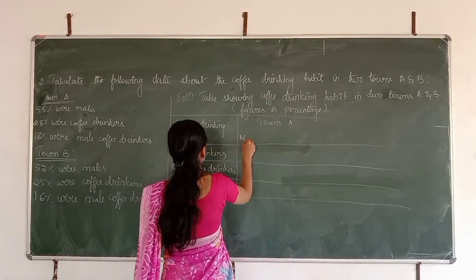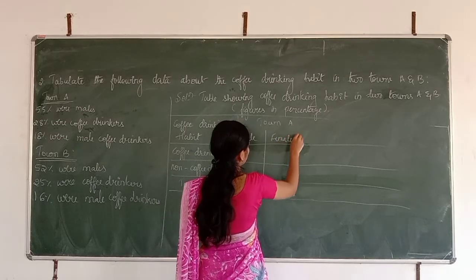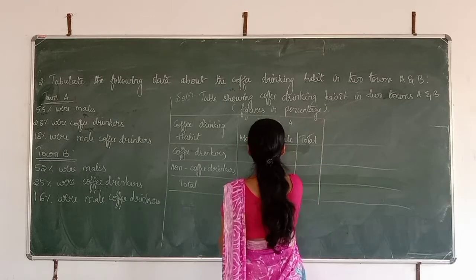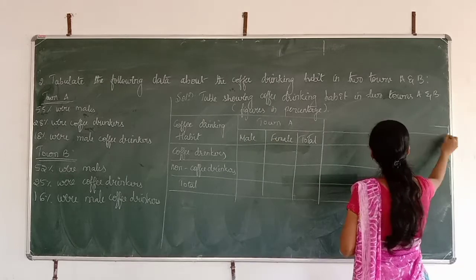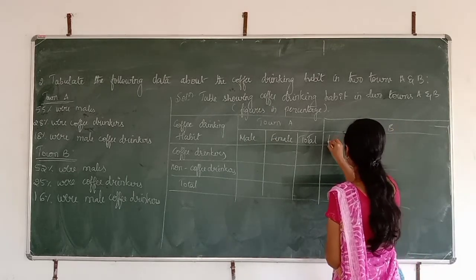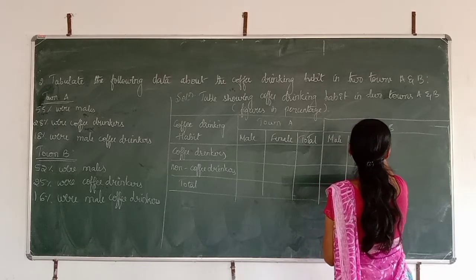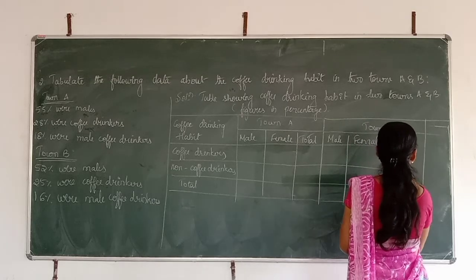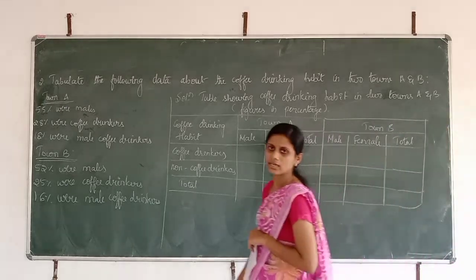The columns under each town will be: male, female, and total. This is the blank table we have prepared. Now we are going to fill the information in this blank table.